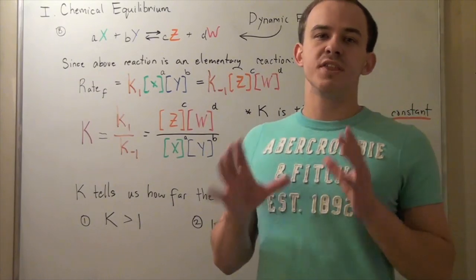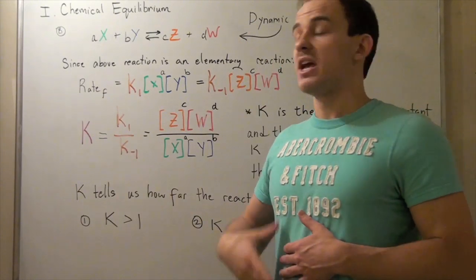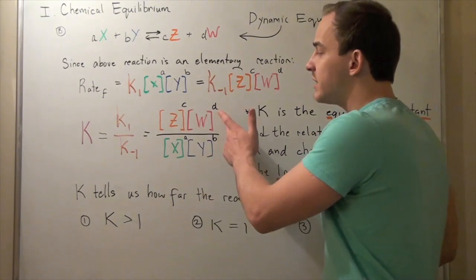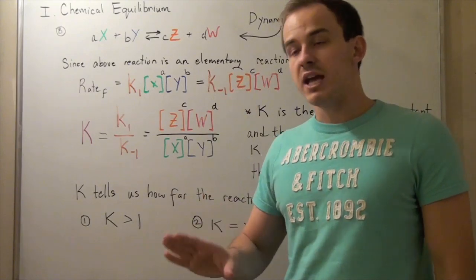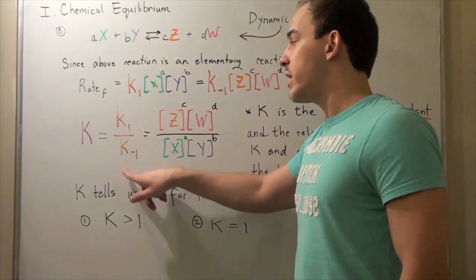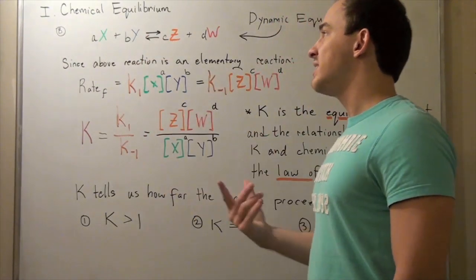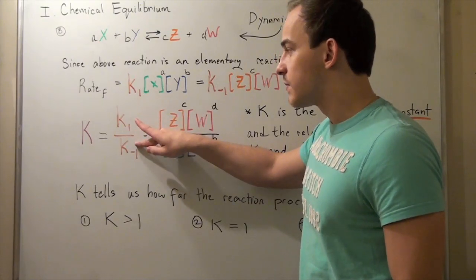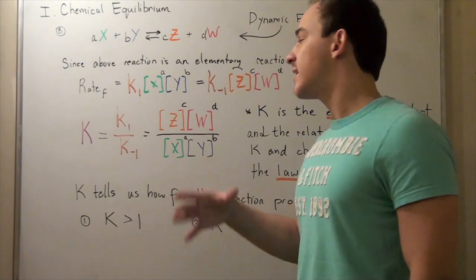A few more important things about equilibrium constants: the equilibrium constant is unitless, because we're dividing concentration by concentration and the units cancel out. The equilibrium constant depends strictly on temperature, because K is actually a ratio of rate constants, and since rate constants depend only on temperature, K also depends only on temperature — it does not depend on concentration.